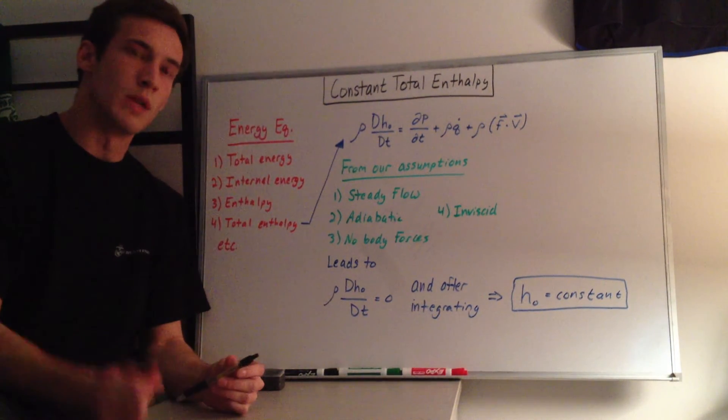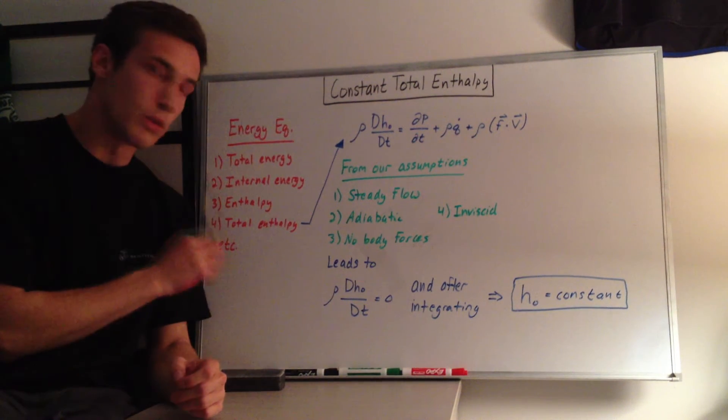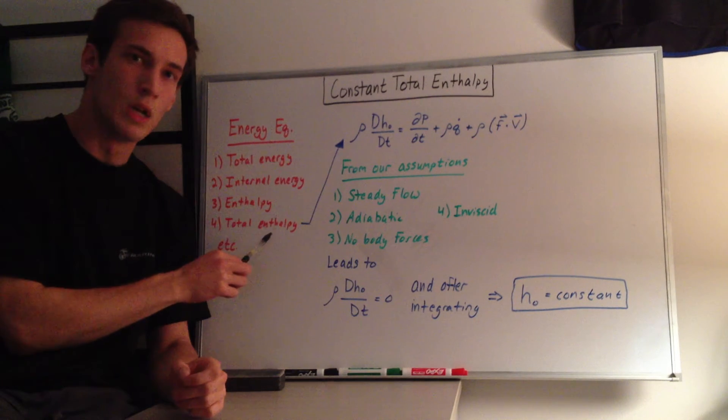And you can manipulate the energy equation to get it in terms of variables that you like. So, what we're going to look at is the energy equation in terms of the total enthalpy, H sub zero, or H naught.